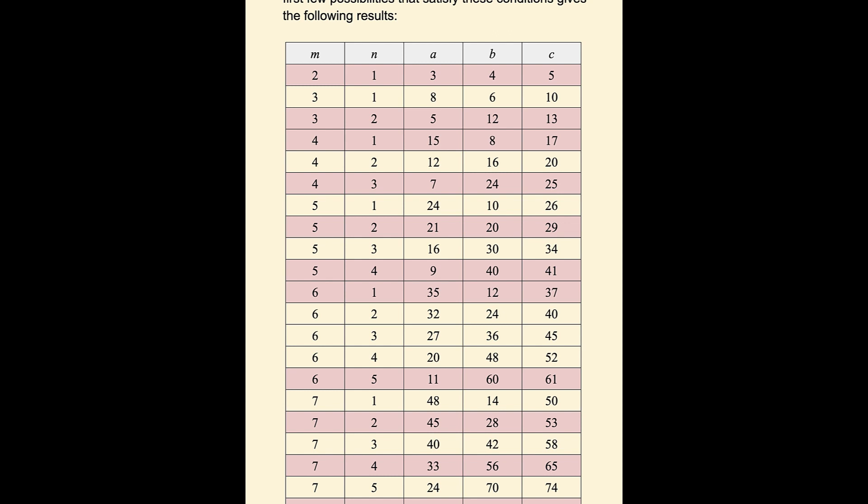But the very next one there, with a value of m of 3, and n is 1, gives us 8, 6, 10, which is a Pythagorean triple, but it is not a primitive.